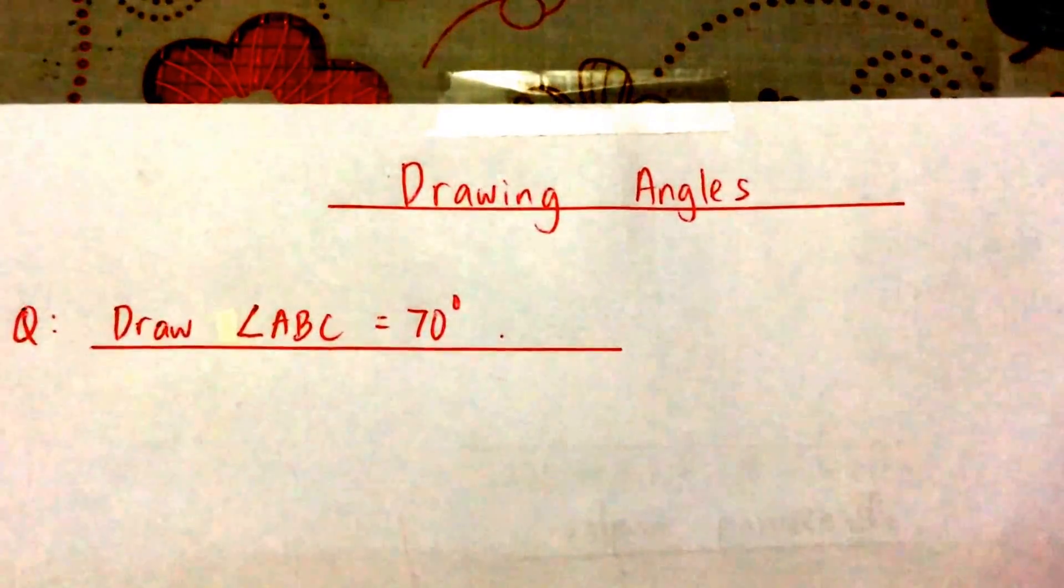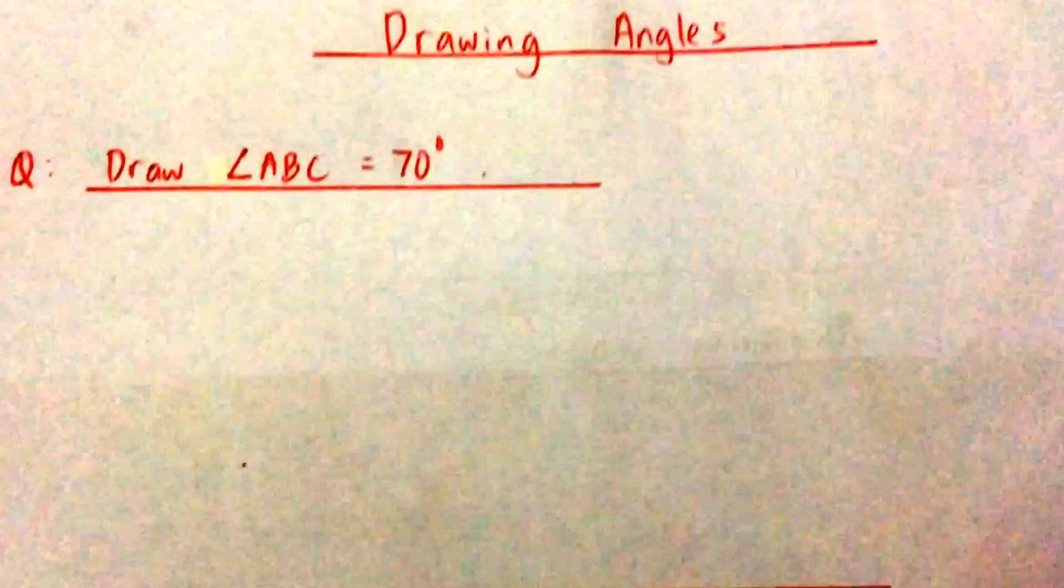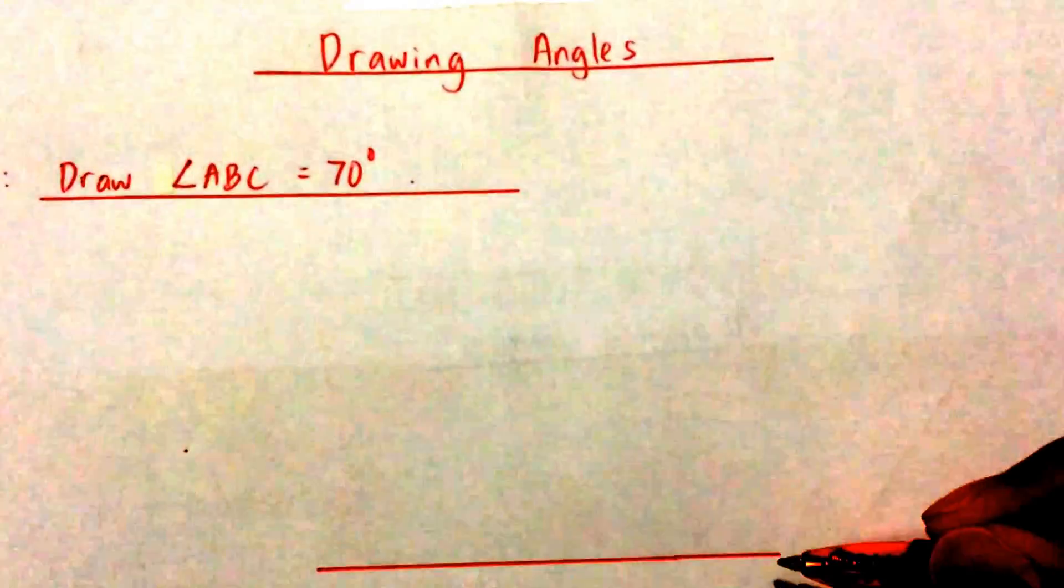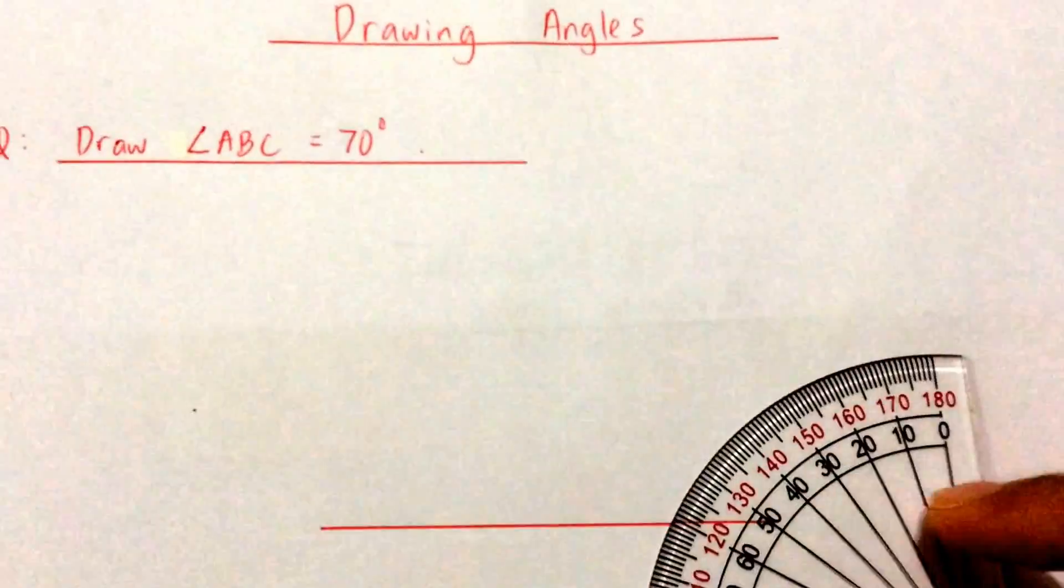Right, first step you will draw a line with a ruler. Okay, I've drawn my line. Now what do you do next? At the corner of your line you draw another small line.